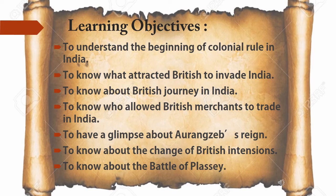First of all, let us revise or recap the previous learning. In Part 1, we studied about different periods of Indian history. We discussed about knowing our country India and then we studied about the advent of Europeans, i.e. Portuguese, Dutch, British and French. Now today's learning objectives would be to understand the beginning of colonial rule in India.